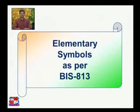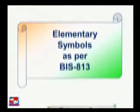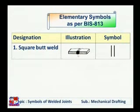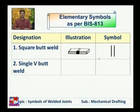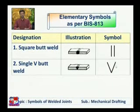Elementary symbols as per BIS 813: the first is the square butt weld, where two plates are joined and its symbol is two vertical lines placed at uniform distance. The second is the single V butt weld — a V cut is made at the intersection of two plates and welding is done inside the V shape. Its symbol is the capital letter V. The third is the single bevel butt weld — a V cut is made on one side only, with one plate having an inclined cut and the other a straight cut, forming a shape like a V with one vertical line.